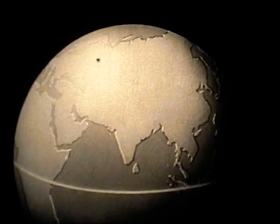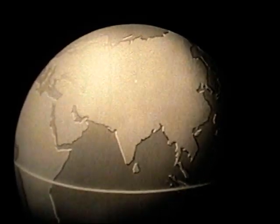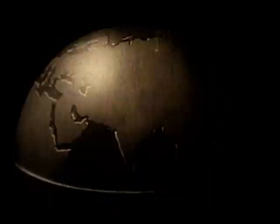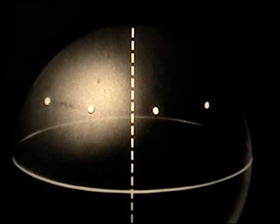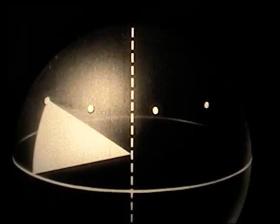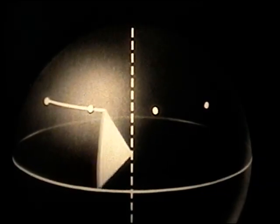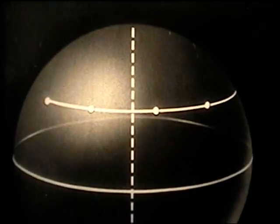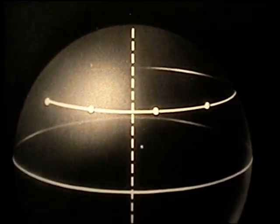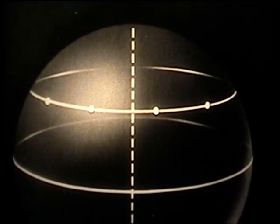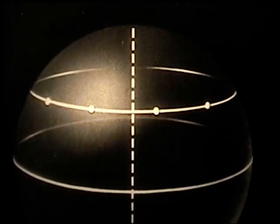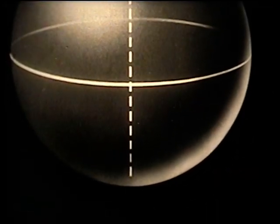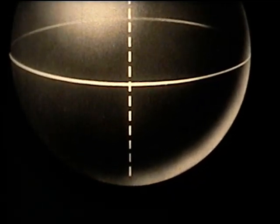If a number of places are the same angular distance from the equator, like these, an imaginary line joining them can be drawn round the globe. This is a line of latitude, and all places on this line have the same north latitude. In the same way, a line of latitude can be drawn south of the equator.